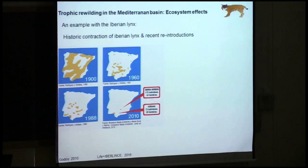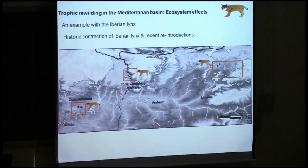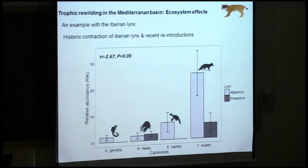The second example involves the Iberian lynx, which suffered a contraction of its range during the last century, but is now expanding — not through natural expansion but due to human-led reintroductions. We again selected areas where the animals are expanding and designed a study comparing areas with and without lynx, with the objective of answering whether Iberian lynx presence decreases mesocarnivore abundance and whether such an effect may cascade into the small mammal and rodent community. Results show a general decrease in mesocarnivore abundance in the presence of lynx.